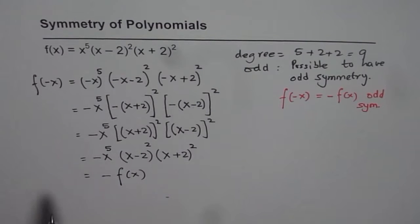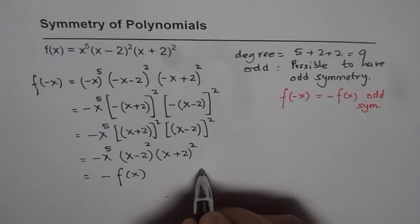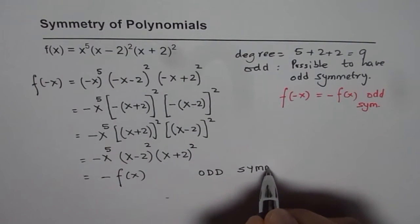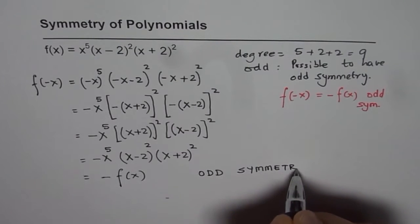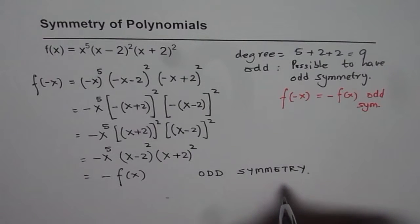Since f(-x) equals -f(x), we say it has odd symmetry. That is how we can show that the function has odd symmetry. Odd symmetry really means that it is symmetric about the origin.